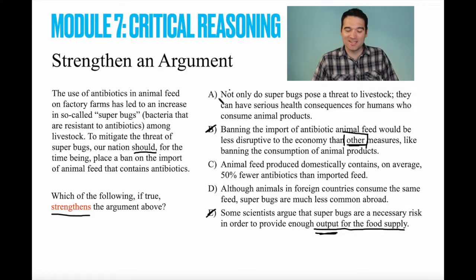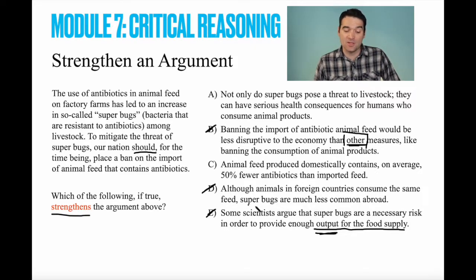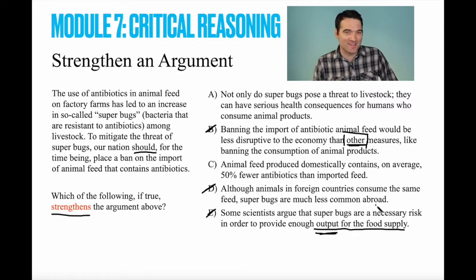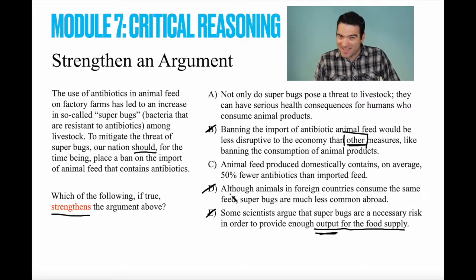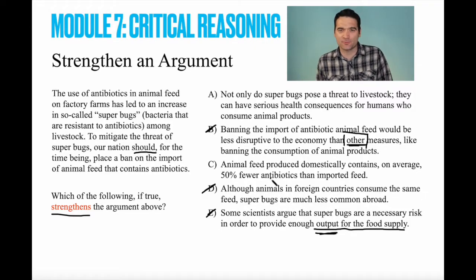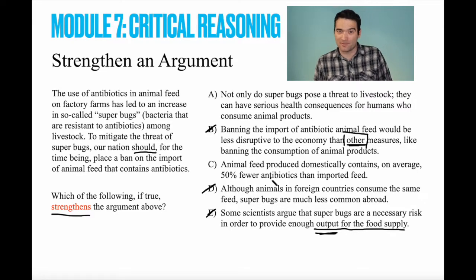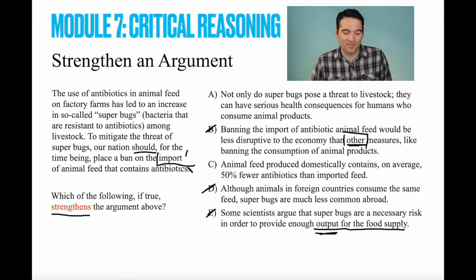The next one we're going to eliminate is answer option D: although animals in foreign countries consume the same feed, superbugs are much less common abroad. We're starting to get at the weakness of this argument, but this one goes in the wrong direction — if anything, this weakens the argument. If animals in other countries are doing better than our animals, maybe we should import their feed. So D is out.